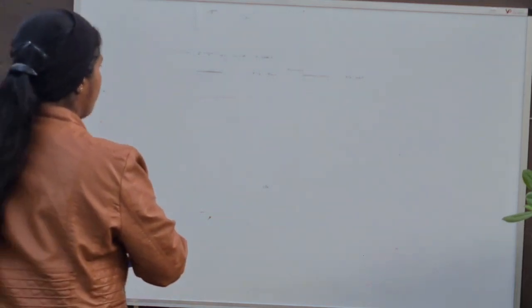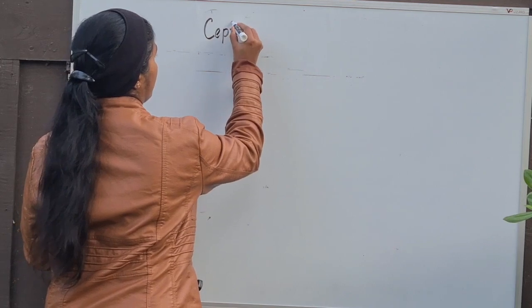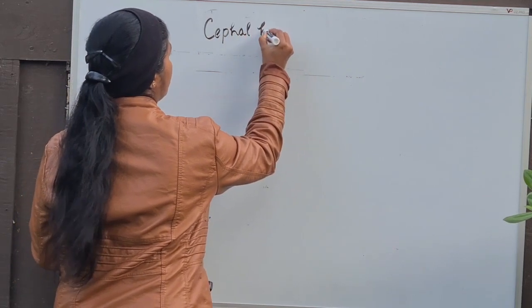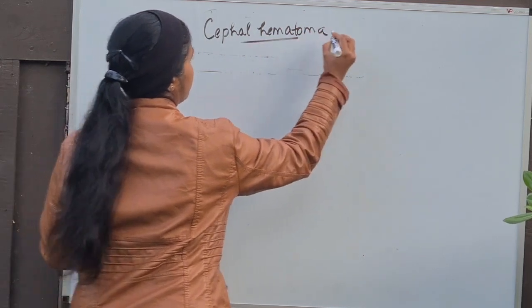Now we are going to see about Cephal Hematoma and Caput Succedaneum. Before we go into further, we are supposed to know about the anatomy.